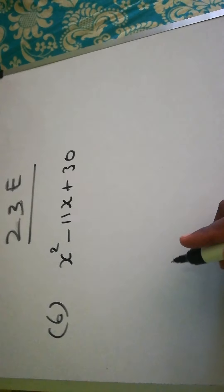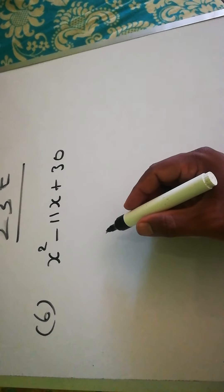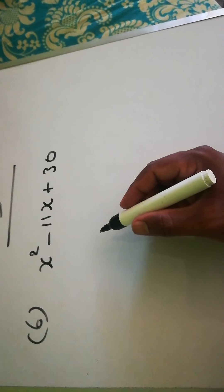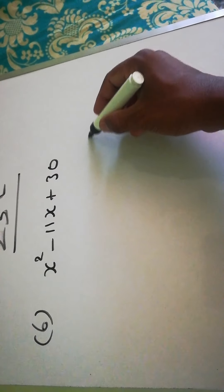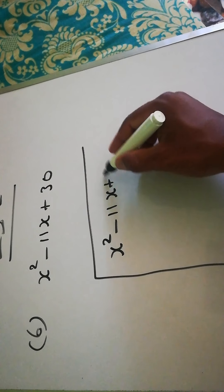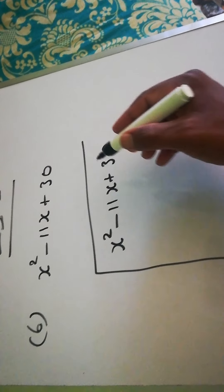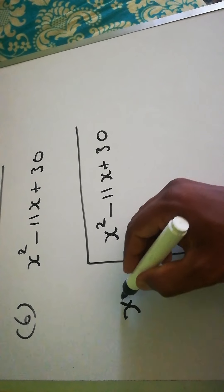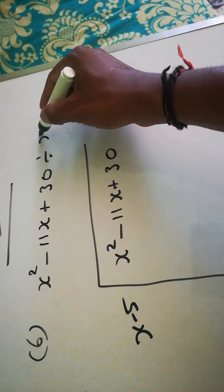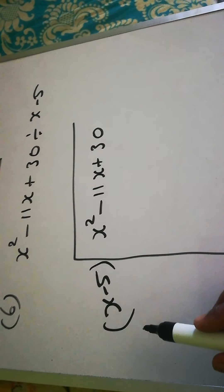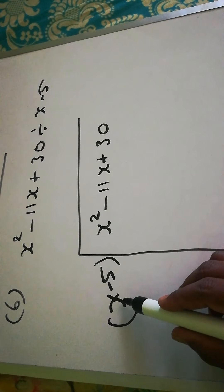We are dividing the following polynomials by binomials. The question is x² - 11x + 30, and we will divide by x - 5 using the long division method. We'll write it out like this.